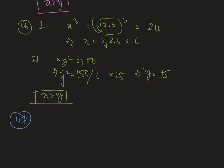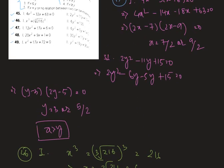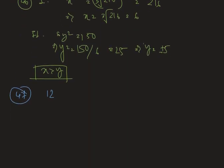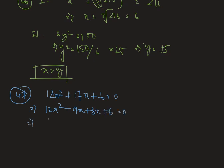Moving to question number 47: here we have the quadratic equation 12x² + 17x + 6 = 0. After factorizing, we get 12x² + 9x + 8x + 6 = 0, which gives (4x + 3)(3x + 2) = 0. Therefore x = −3/4 or x = −2/3.